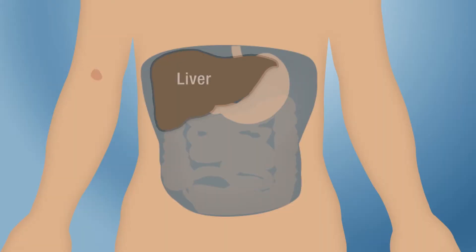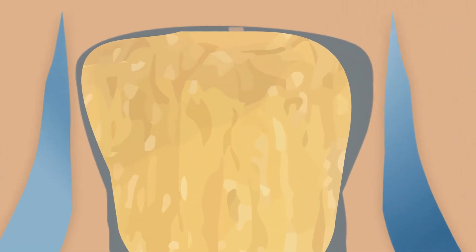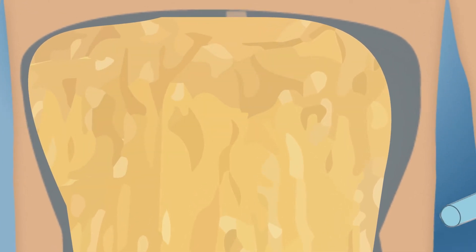Traditionally, islets have been transplanted into the liver, but this site is not ideal. So the DRI is now transplanting these cells into the omentum, the lining covering abdominal organs. This site is rich in blood vessels, key for delivering oxygen to islet cells, and is easy to access surgically.